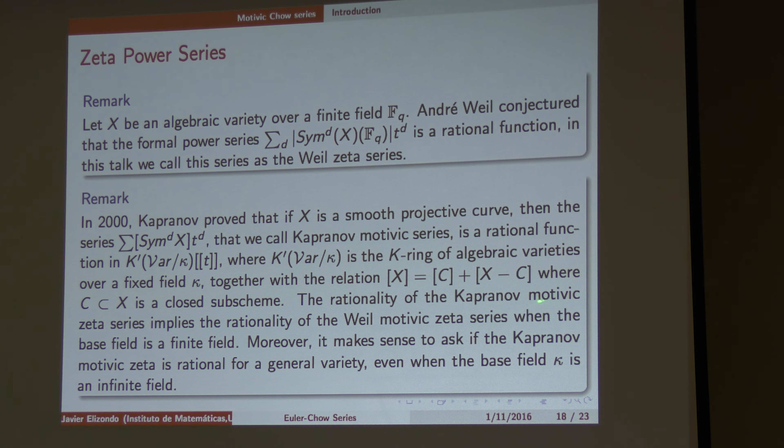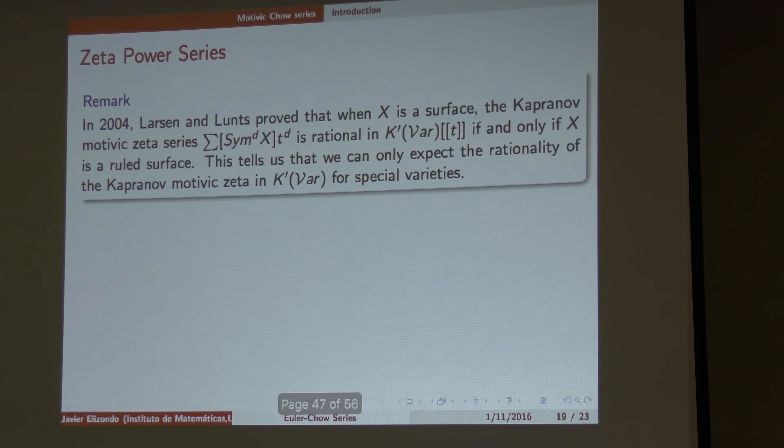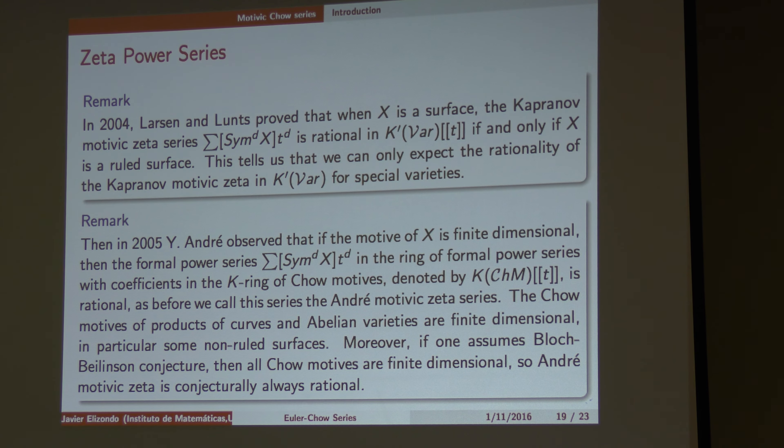So he proved, for Chow varieties, he proved that series is rational. But however, for dimension two, Larsen and Lunts proof, it's only rational when you have a rational surface. If not, it's not. So he proposed...